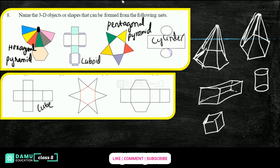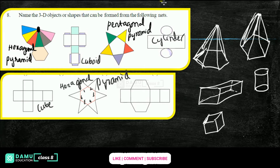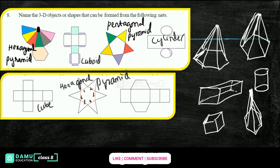The next one is again a hexagonal pyramid. How many sides? One, two, three, four, five, six — that is hexagonal. For seven sides it is heptagonal, for eight it is octagonal, for nine it is nonagonal, and so on. So for this net, all the points are joined at one place — this is a hexagonal pyramid. The next one you'll get is a trapezoid shape.